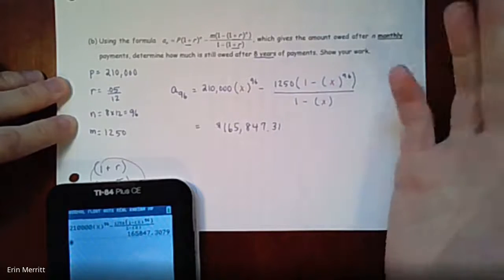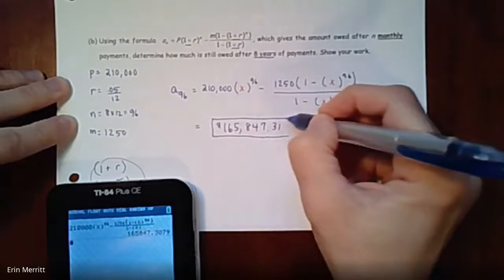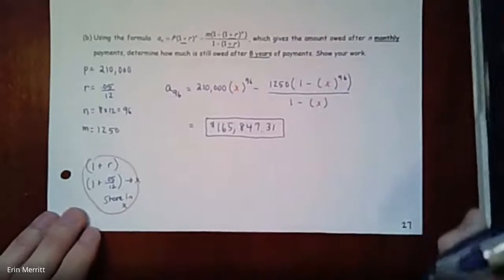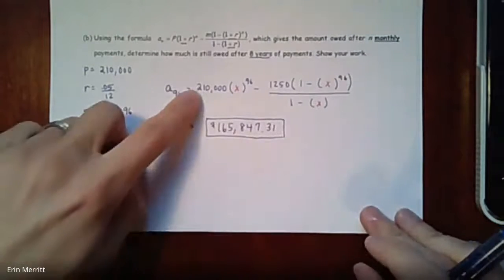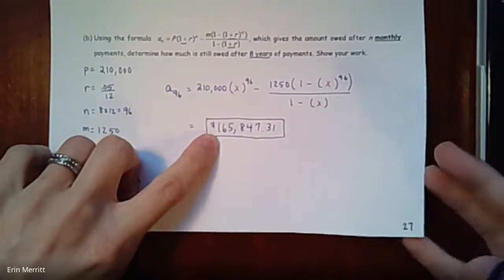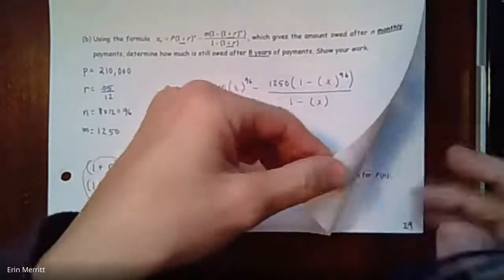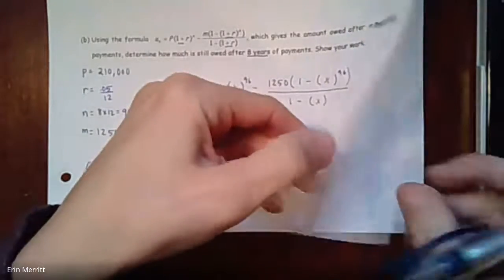That's what's left after eight years, which actually makes sense because most loans for houses are either 30 years or sometimes 15 years. They're meant to be paid off over a long amount of time, so it's not super surprising that after eight years it's come down from 210 and it's still $165,000.